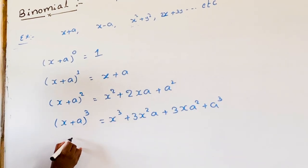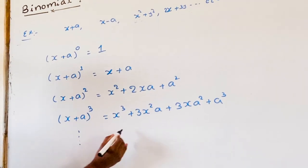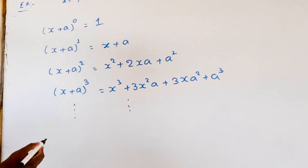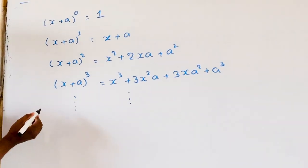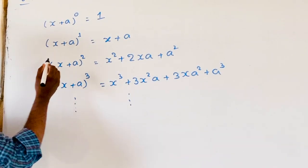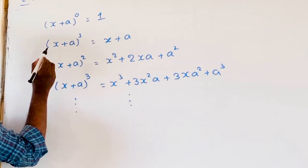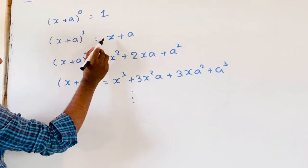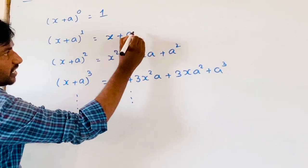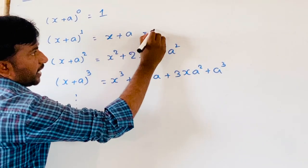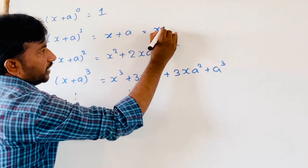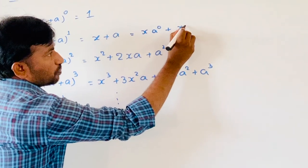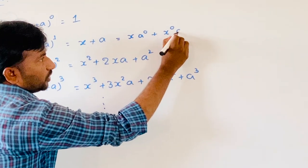And so on, remaining (x+a) whole power 4 and (x+a) whole power 5 and so on. Now we observe: (x+a) whole power 1 is equal to x plus a. I will rewrite that one: x into a power 0 plus x power 0 into a.